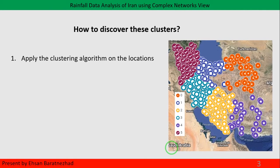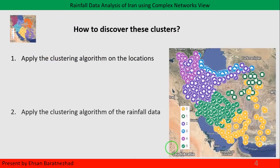But the question is: how can we find these clusters? One way is to apply a clustering algorithm on the location — we have the latitude and longitude of every point on the map, and most clustering algorithms can deal with that. But when we want to cluster locations based on rainfall data, it's not a smart choice to cluster only based on station locations. Sometimes two points on the map are close to each other but their rainfall patterns are totally different, so it's always better to cluster the temporal rainfall data to get the most accurate results.